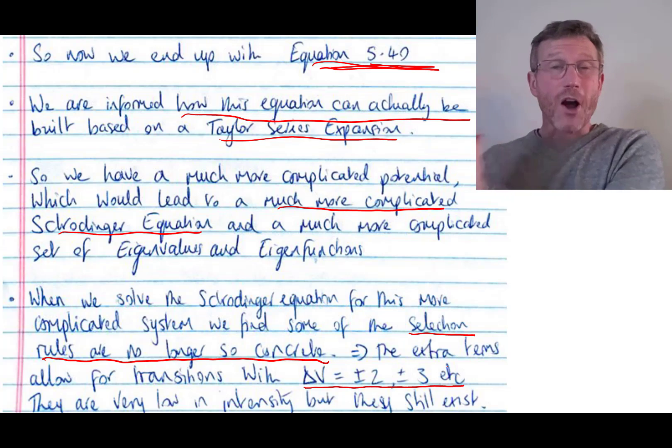So all this section of the textbook does is it's saying, hey, we can get these overtones, we see them in IR spectroscopy, and this is the reason why they occur. Just trying to tie a few loose ends together there.